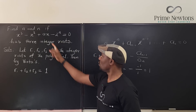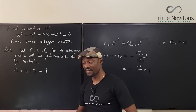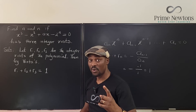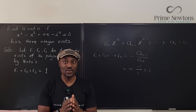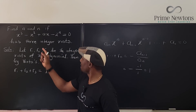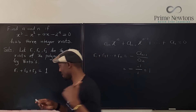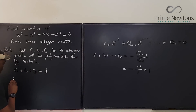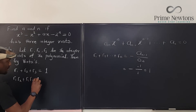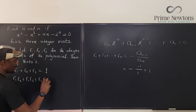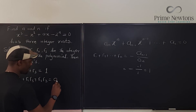According to Vieta's formula, the sum of pairwise products of the roots equals the middle coefficient. So r1·r2 + r1·r3 + r2·r3 equals that coefficient divided by 1, which equals a. That gives us our second equation involving a.